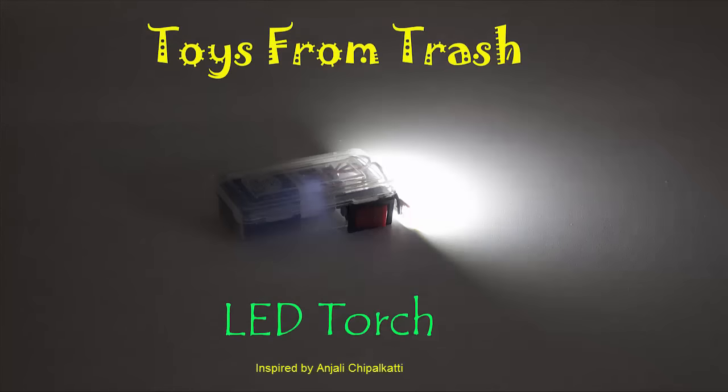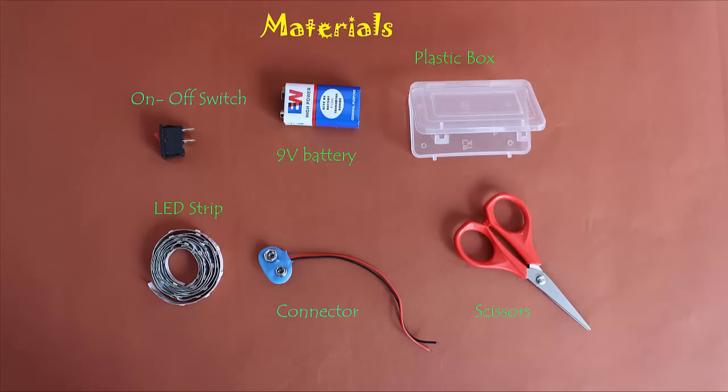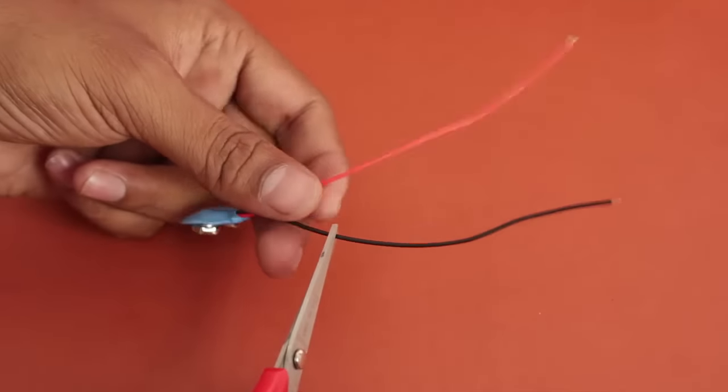Today we will make a bright and luminous torch using an LED strip. You will need a small plastic box, a 9V battery, an on-off switch, connector, wire, and an LED strip.